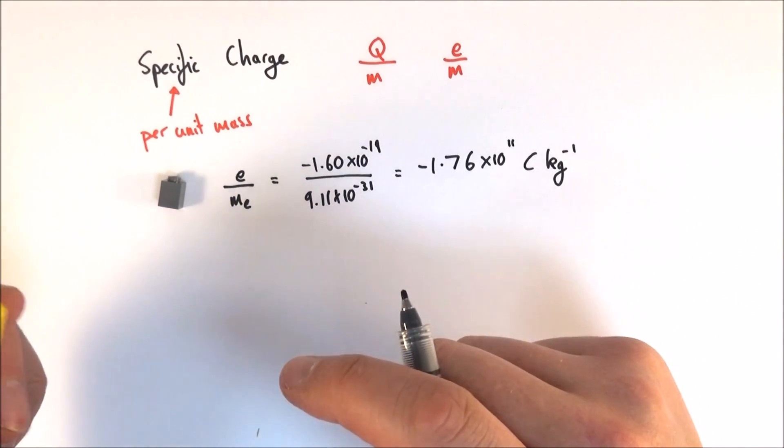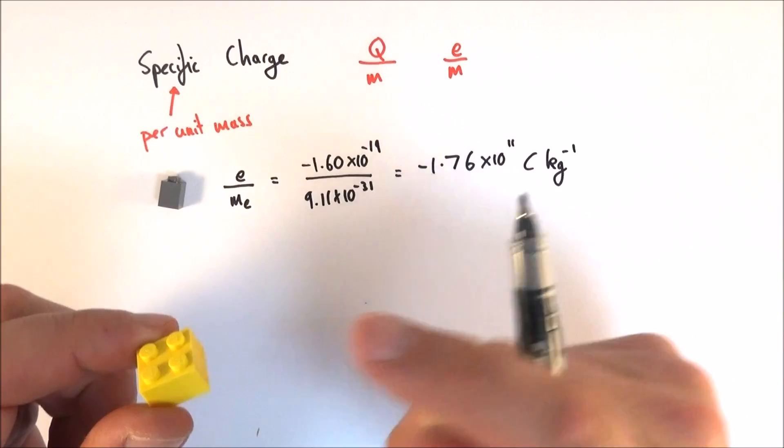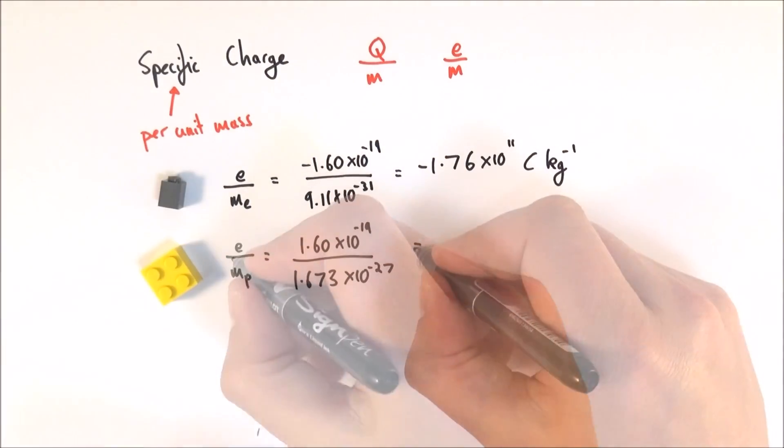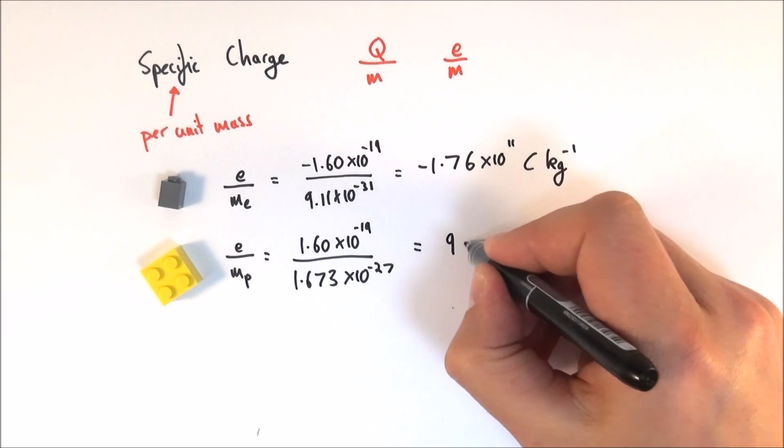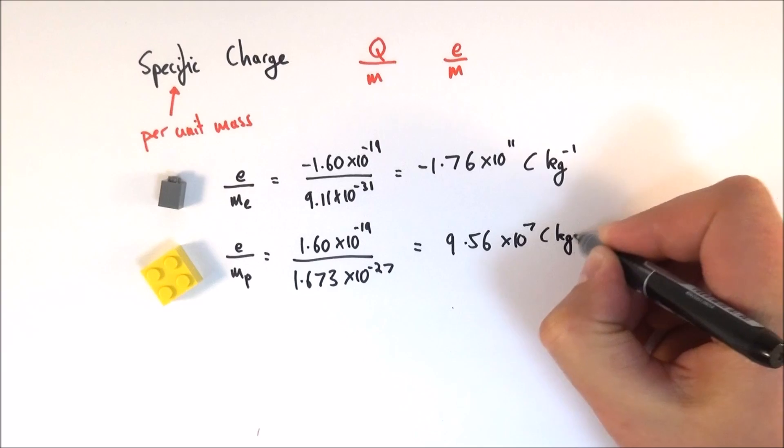Another common example is a proton. So again to work out the charge mass ratio of this, you look at the elementary charge and the mass of the proton, and in this case it's equal to 9.56 times 10 to the 7 coulombs per kilogram.